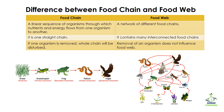In a food chain, if one organism is removed the whole food chain is disturbed. For example, if I remove the frog from the food chain, the grasshopper population will increase while the python population will decrease, because the python cannot find its food and the grasshopper is no longer eaten by the frog. The whole food chain is disturbed.